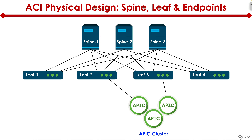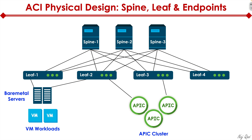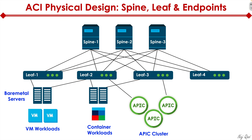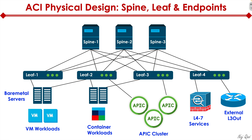Typically you would get a cluster of three APIC controllers to have a quorum for high availability and redundancy. You also have bare metal servers that may be dual-homed into different leaf switches. You could have different VM workloads running on physical servers with the hypervisor of your choice — ESXi, KVM, Hyper-V. You could have container workloads managed through Docker or Kubernetes. You could have an external Layer 3 out router that connects you to a non-ACI fabric, and layer 4 through 7 services like firewall, IPS, and load balancers — all connected directly to the leaf.